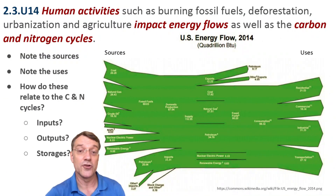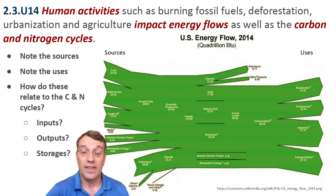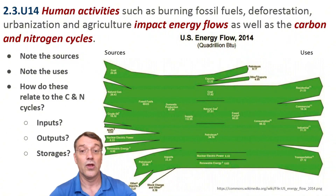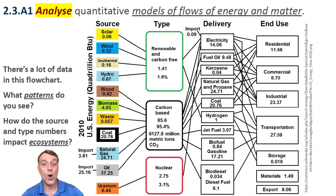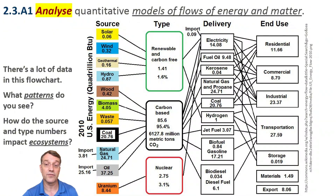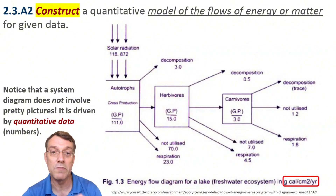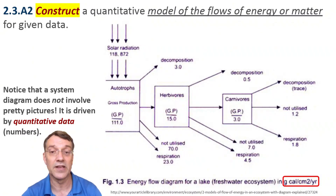Human activities significantly impact energy flows and biogeochemical cycles. This energy flow diagram shows sources and uses of energy in the United States, with fossil fuels dominating. Consider how these energy choices affect carbon and nitrogen cycles through inputs, outputs, and storage changes. When analyzing quantitative models of energy flow, look for patterns in the numerical data: what energy sources predominate, how efficiently is energy transferred between sectors, and how might these patterns impact ecosystems through carbon emissions or land use changes? When constructing quantitative models of energy or matter flows, include all major components with their numerical values. This example shows energy flow through a lake ecosystem with values in kilocalories per square centimeter per year.